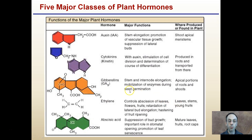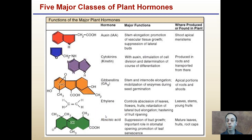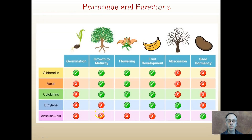Ethylene is found in leaves, stems, and young fruits. It concerns abscission — the dropping of leaves — the flowering of fruits, and fruit ripening. Abscisic acid is produced in mature leaves and root caps, and it can suppress bud growth. It's also important for stomatal opening. This gives you a quick overview of hormones, their function, and where they may be found at different stages of the plant.